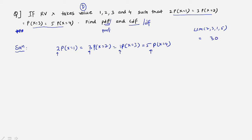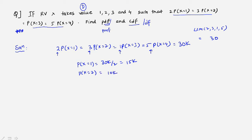We equate the entire expression to 30k. Separating each term: P(X=1) = 30k/2 = 15k, P(X=2) = 30k/3 = 10k, P(X=3) = 30k/1 = 30k, and P(X=4) = 30k/5 = 6k.